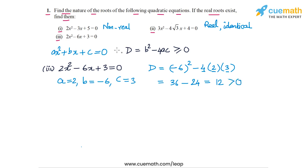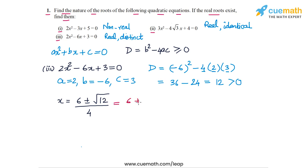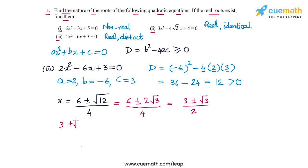Since the discriminant is greater than 0, this equation will have real and distinct roots. The roots are given by the quadratic formula: x = (-b ± √discriminant) / 2a = (6 ± √12) / 4. We can write √12 as 2√3, so this becomes (6 ± 2√3) / 4. Cancelling the common factor of 2, we get (3 ± √3) / 2.